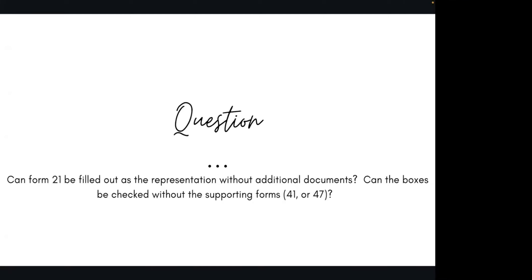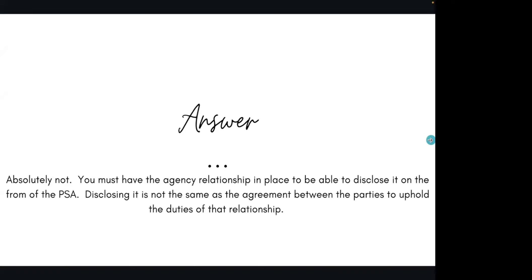Scenario two: can Form 21 be filled out as the representation without additional documents? In other words, can I check the boxes and put my name down where it belongs without having a seller representation or a buyer representation? When you're working with for-sale-by-owners, the answer is no. It's different with published Northwest MLS listings, but for off-market listings: no — you have to have an agency relationship in place in order to disclose it on the purchase and sale agreement. Disclosing it is not the same as the agreement between the parties to uphold their duties of that relationship. I actually have to have my representation agreement to have a true agency relationship.